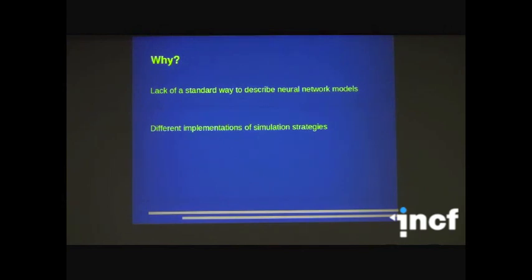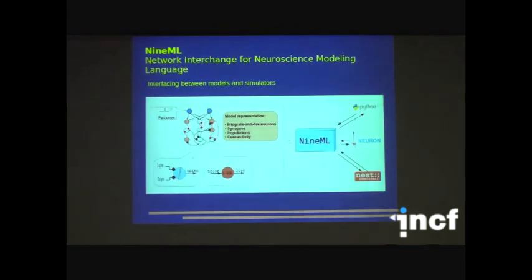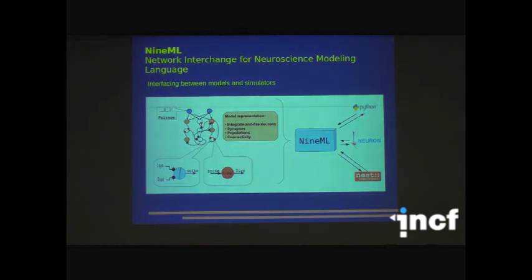So why do we have this issue? This is mainly due to two layers of problems. The first, we lack a standard way to describe a neural network model. The second layer is different simulators implement simulation strategies differently. So to address this problem, we propose a descriptive language to describe and define neural network models.